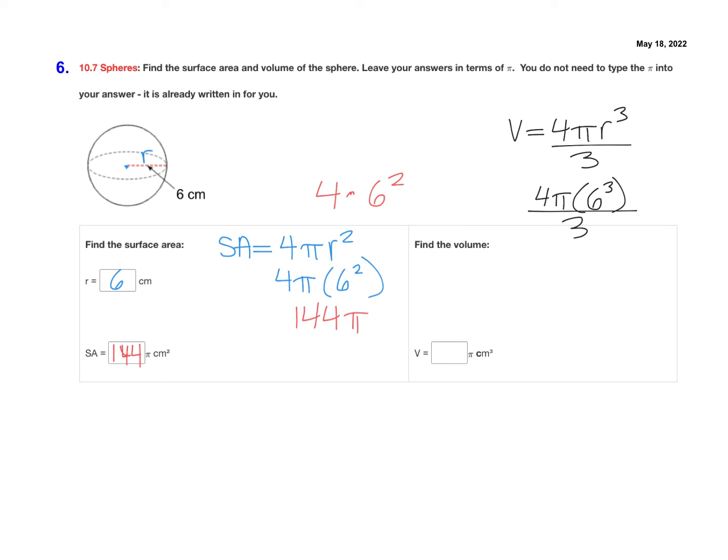Again, I would take my calculator and just type 4 times 6 to the third power. So 4 times 6 to the third power is 864. So I have 864 pi on top and then don't forget we do have to divide by 3. We simplify the numerator first and then we divide by 3.